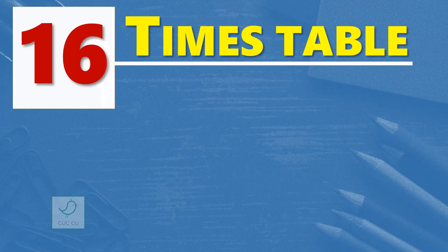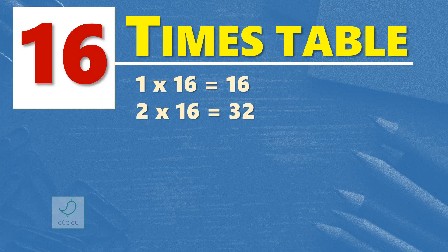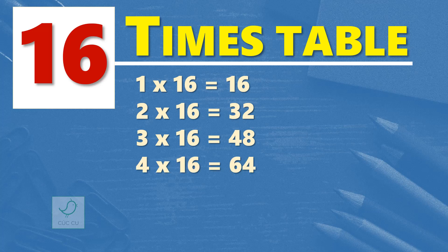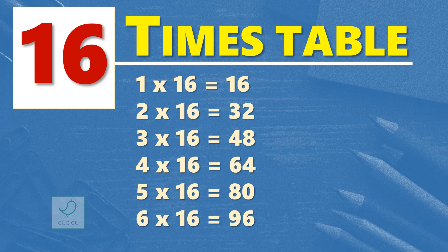16 times table. 1 times 16 is 16. 2 times 16 are 32. 3 times 16 are 48. 4 times 16 are 64. 5 times 16 are 80. 6 times 16 are 96. 7 times 16 are 112. 8 times 16 are 128.